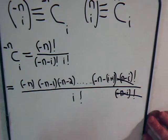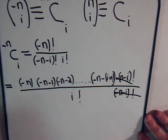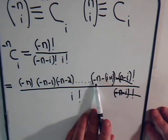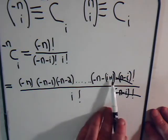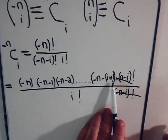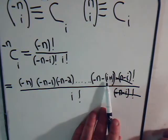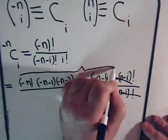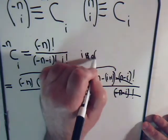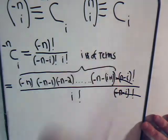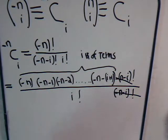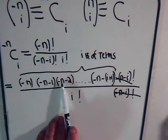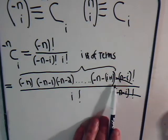So this term and this term cancel. What we have left is minus n, times minus n minus 1, times minus n minus 2, all the way down to a term of minus n minus i plus 1 — not all the way to minus n minus i, but one term higher than that. Going from here to here, we have i minus 1 terms, or including the first one, i number of terms in the numerator.